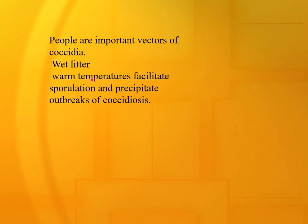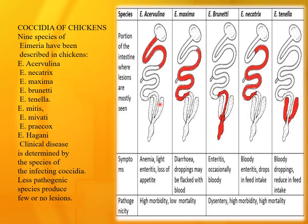Litter is an important factor for coccidia; warm, wet temperatures facilitate sporulation and precipitate outbreaks. Nine Eimeria species have been described in chickens: Eimeria acervulina, necatrix, maxima, brunetti, tenella, mitis, mivati, barcox, and hagani. The clinical disease is determined by the species of the infecting coccidia.